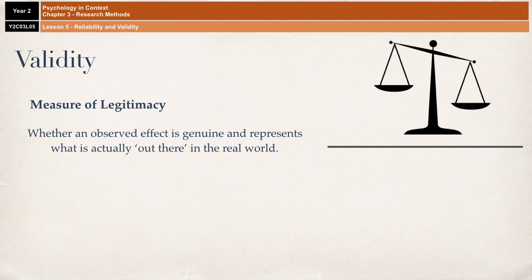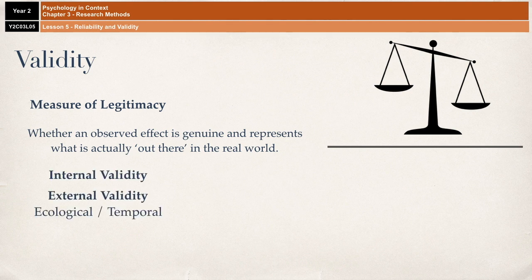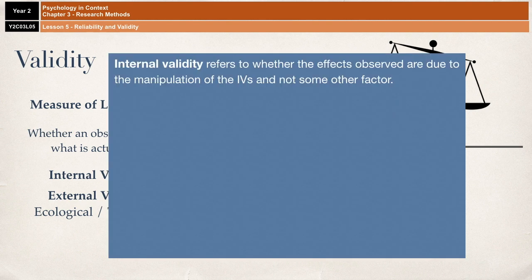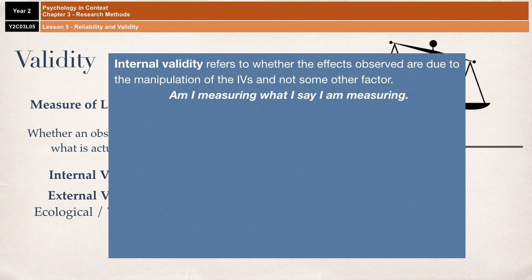There are two different types of validity: internal validity and external validity. Internal validity is whether the effects that have been observed are due to the manipulation of the IV. Am I measuring what I say I'm measuring? This is very important because there are other things that can come up in a study that can affect what it is that you're measuring.